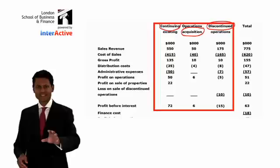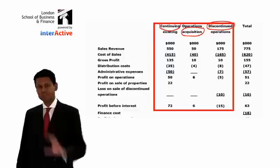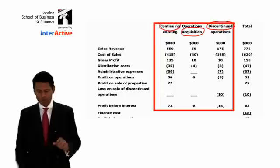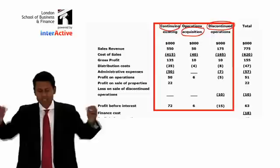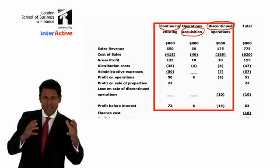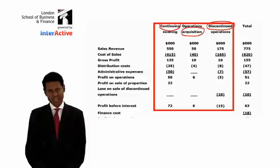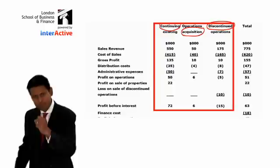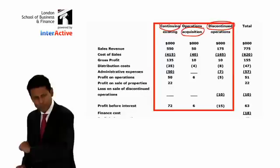So you have to applaud the directors, because you can see they made the right decision. But before IAS 8 came out, would you agree that this kind of information was not available to shareholders? All they would see was 775. Now, by breaking it up into continuing, acquisitions, and discontinued, shareholders and stakeholders can see exactly how the directors have fared — and understand that closing down a division has been good for this company, because in exchange they've got a very profitable new activity that will continue into the future.